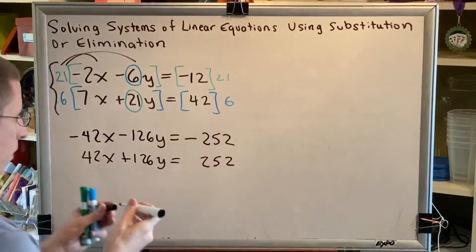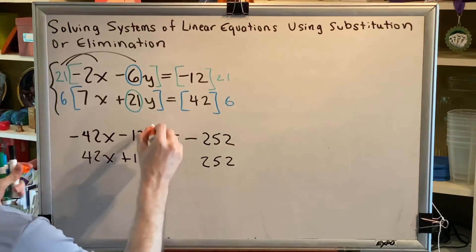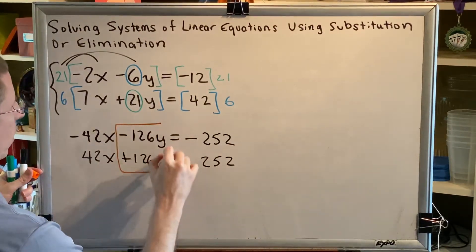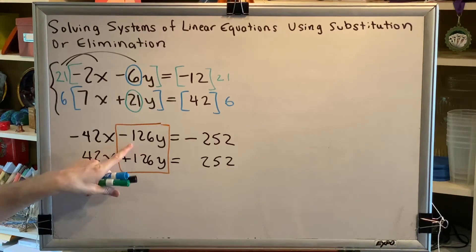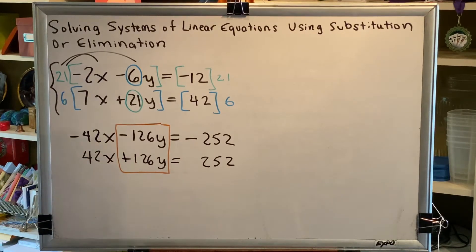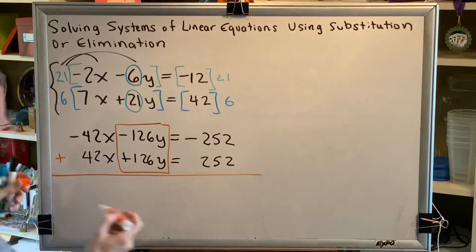Okay, did we achieve the goal? The goal was to create term opposites for our y terms. Yes. We have negative 126y, positive 126y. Those are opposites. And when you add opposites, you get 0.